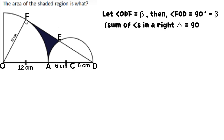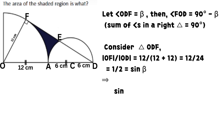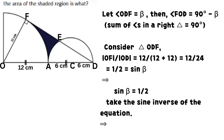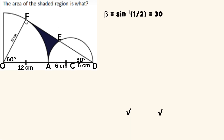Let angle ODF equal beta, then angle FOD equals 90 degrees minus beta. Consider triangle ODF. Line OF divided by line OD equals 12 divided by 24, which equals one half. The result equals sine beta. It implies that sine beta equals one half. Taking the sine inverse of the equation, we have that beta equals the sine inverse of one half, which equals 30 degrees.